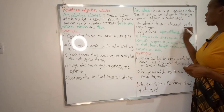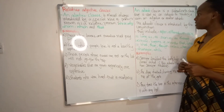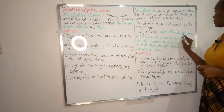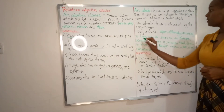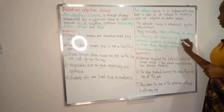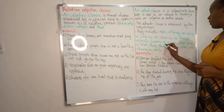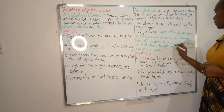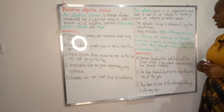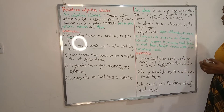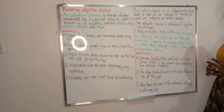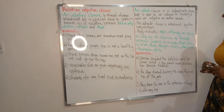The adverb clause is introduced by a conjunction. The conjunctions include: after, although, as, as if, as long as, as soon as, as though, because, before, if, in order that, since, so that, than, though, unless, when, until, whenever, while, and others. Here are examples in sentences.